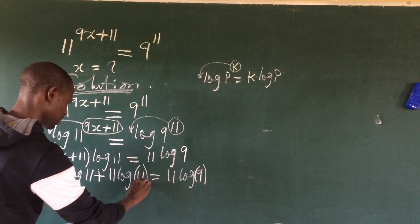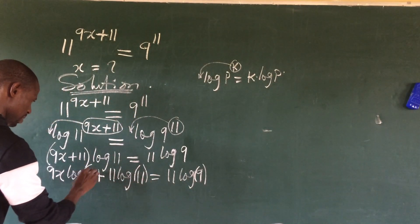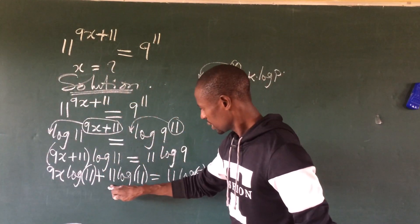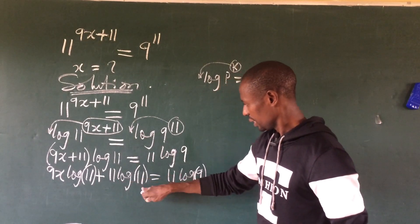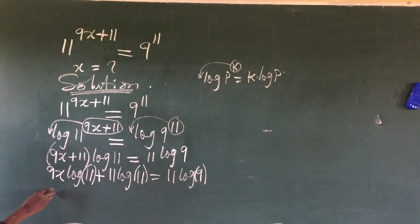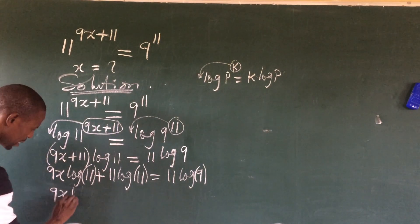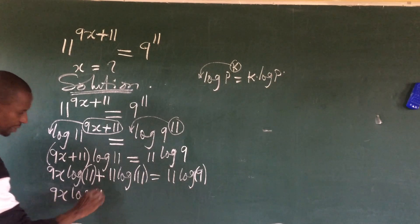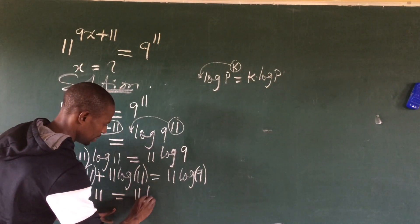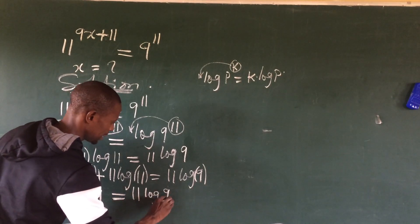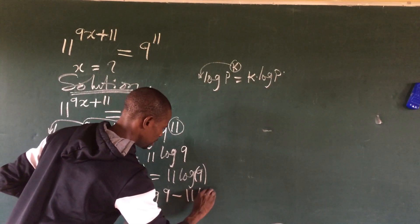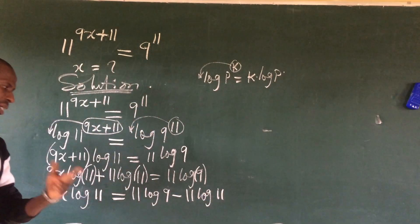Now let's move the 11 log 11 term to the right side of the equation. Doing that, we get: 9x times log 11 equals 11 log 9 minus 11 log 11.